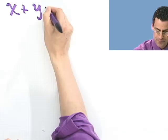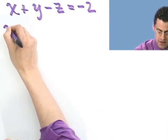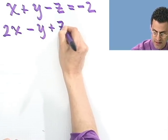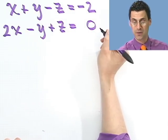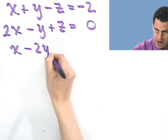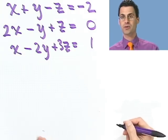x plus y minus z equals negative 2. There's the first equation. 2x minus y plus z equals 0. That's the second equation. And the last equation is x minus 2y plus 3z equals 1. There's the third equation. And I want to solve this system, find the x, y, or z where they all meet up, where they all intersect, using Cramer's rule.